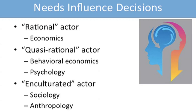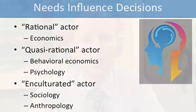At other times, we think more like the quasi-rational actor. Coming out of psychology and behavioral economics, we know that people don't always make rational decisions — sometimes they make irrational decisions. And now we also know there's another type of actor we can think about as we describe our decision-making: the enculturated actor. That comes out of sociology and anthropology research, and it shows how the communities and societies we live in shape our decision-making as well.